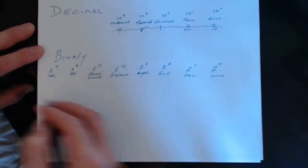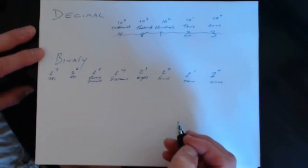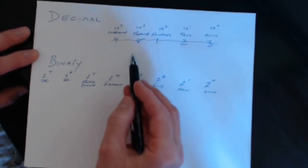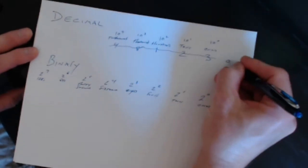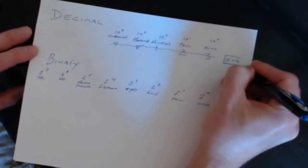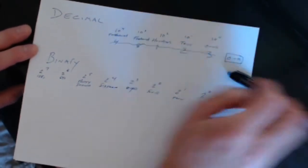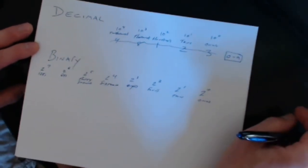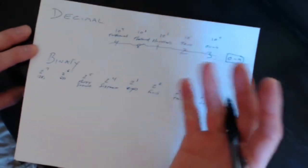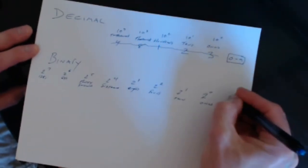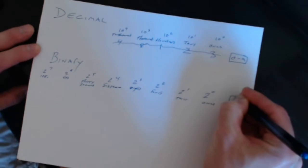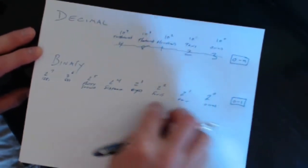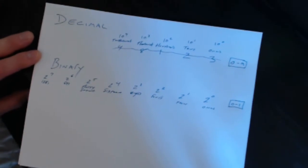To figure out a number, we just put digits below each place. Just like in decimal we can use any digit from 0 to 9 — ten digits total — in binary we only have 0 or 1. So we can only use 0 or 1 to keep track of numbers.